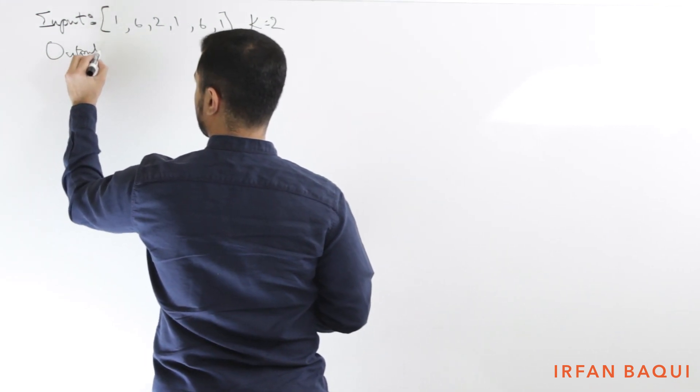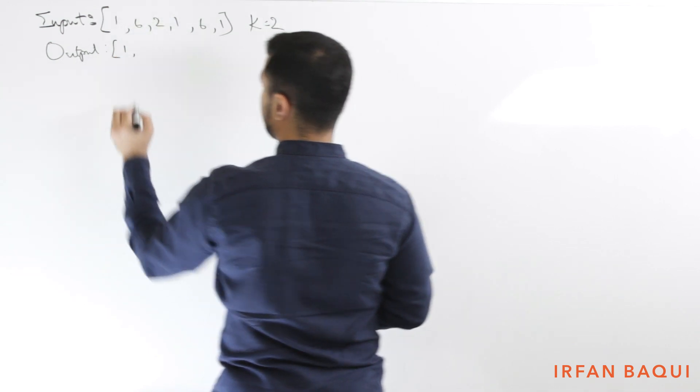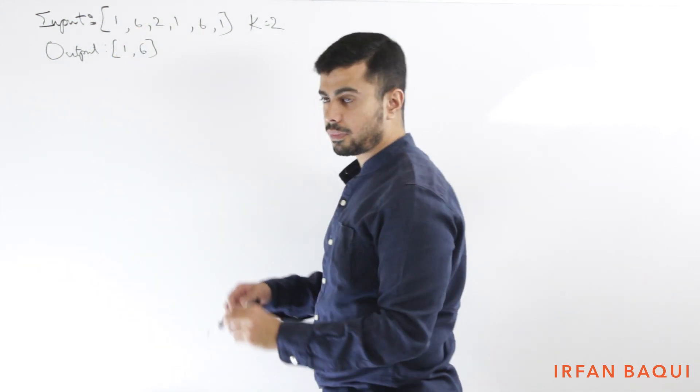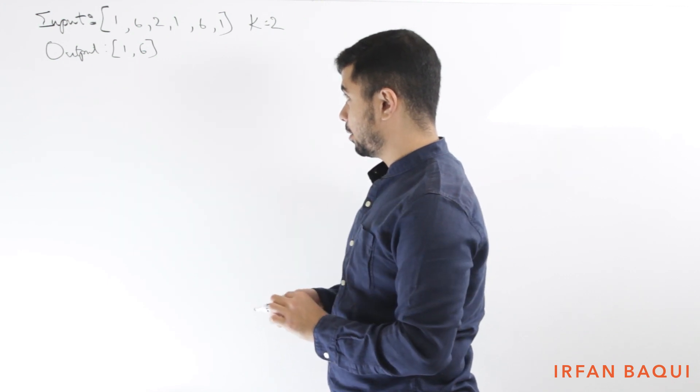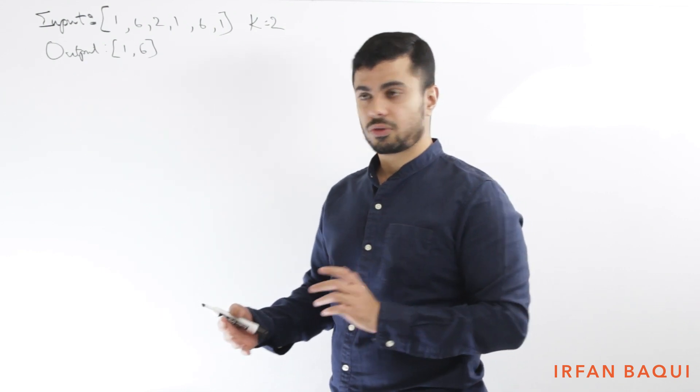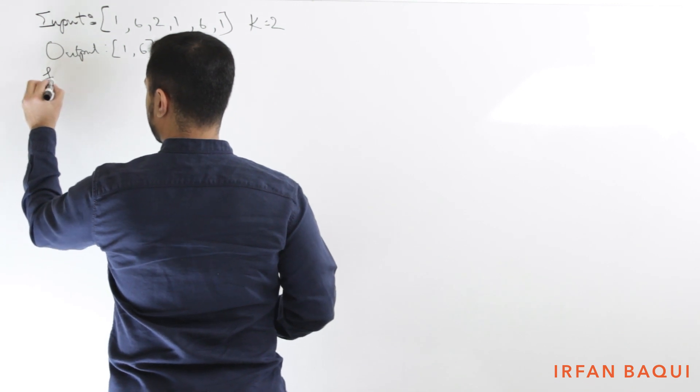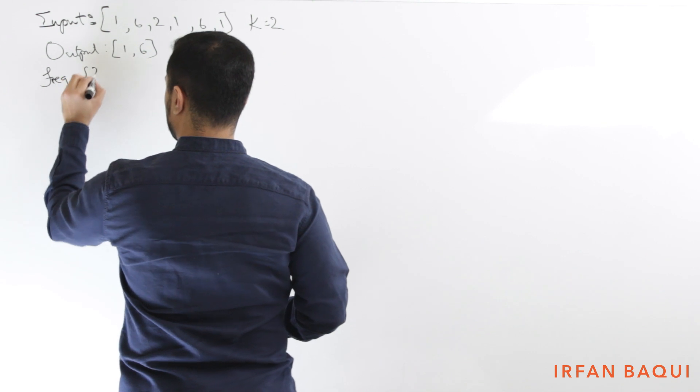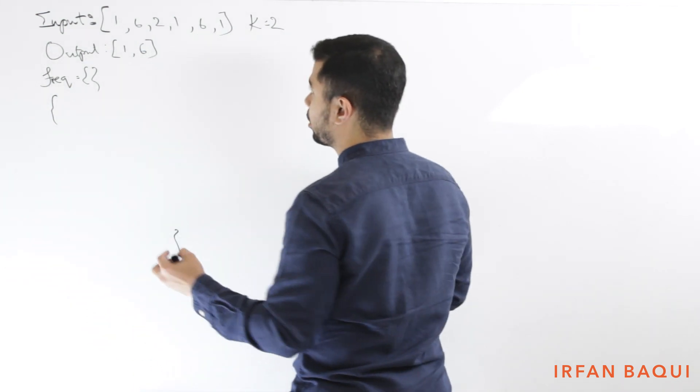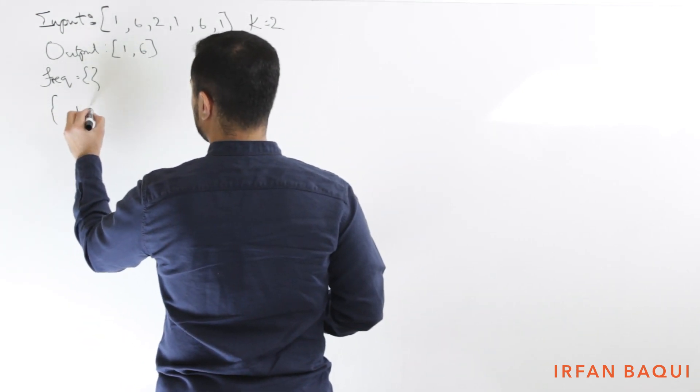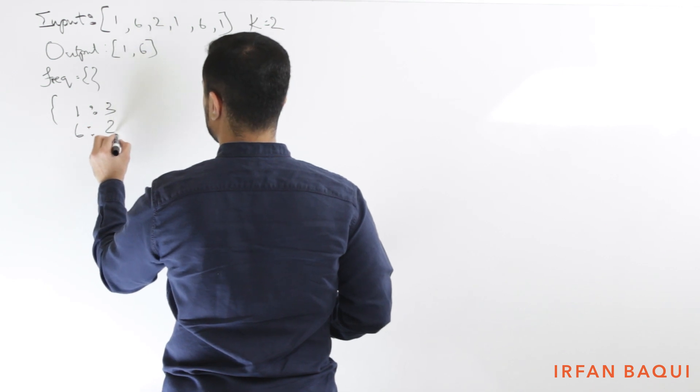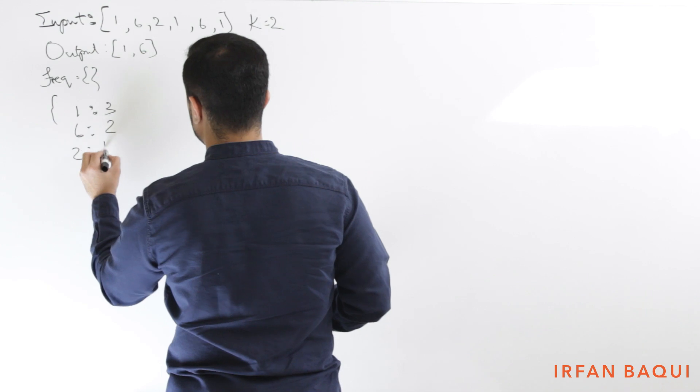So let's say I have an input of an array which can look like 1, 6, 2, 1, 6, 1. And in this case, let's say the k is 2. So in this case, the output will be 1 and 6, and the frequency of that is 1.